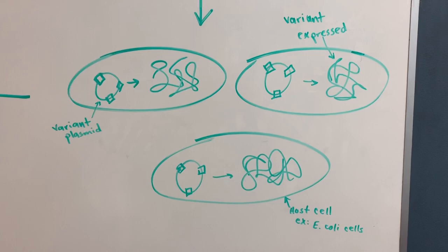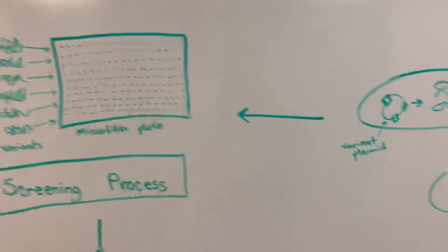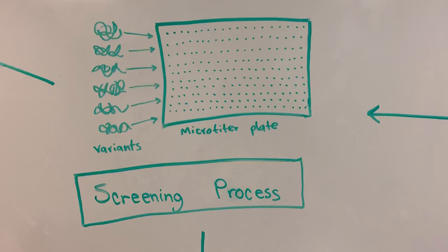Once you have those variants expressed from your host cells, you want to move to the screening process of directed evolution. Before you start all this, it's a good idea to already know what kind of screening process you're going to be doing.